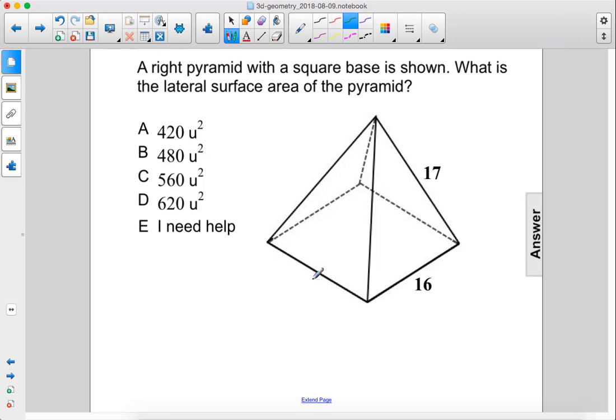A right pyramid with a square base is shown. What is the lateral surface area of the pyramid? So our lateral surface area is going to be 1 half P times L.